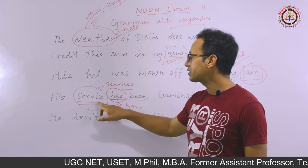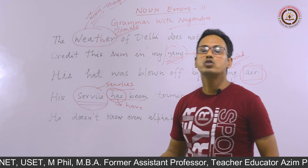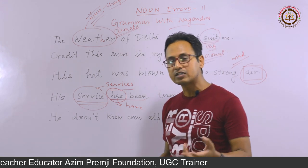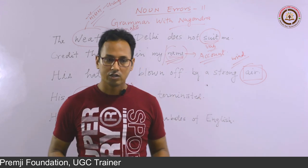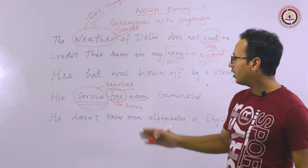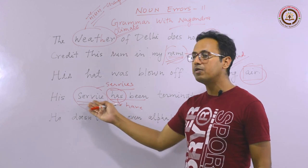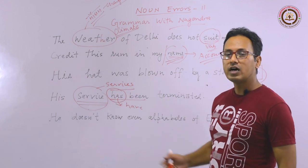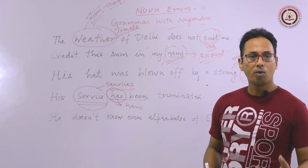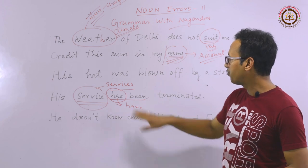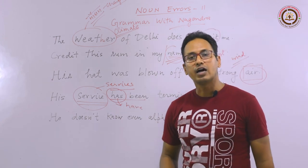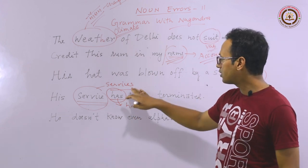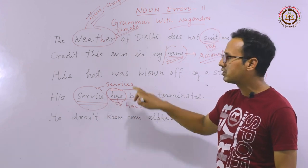People working formally are in 'services,' but 'service' is when nothing is fixed — you can take the service of a waiter or a plumber; it is a very variable thing, not on fixed terms like 'services.' So from now we will say 'government services,' 'private services,' 'defense services.' Even the full form of IAS is 'Indian Administrative Services' — that's why it uses 'services,' because services is the correct noun.